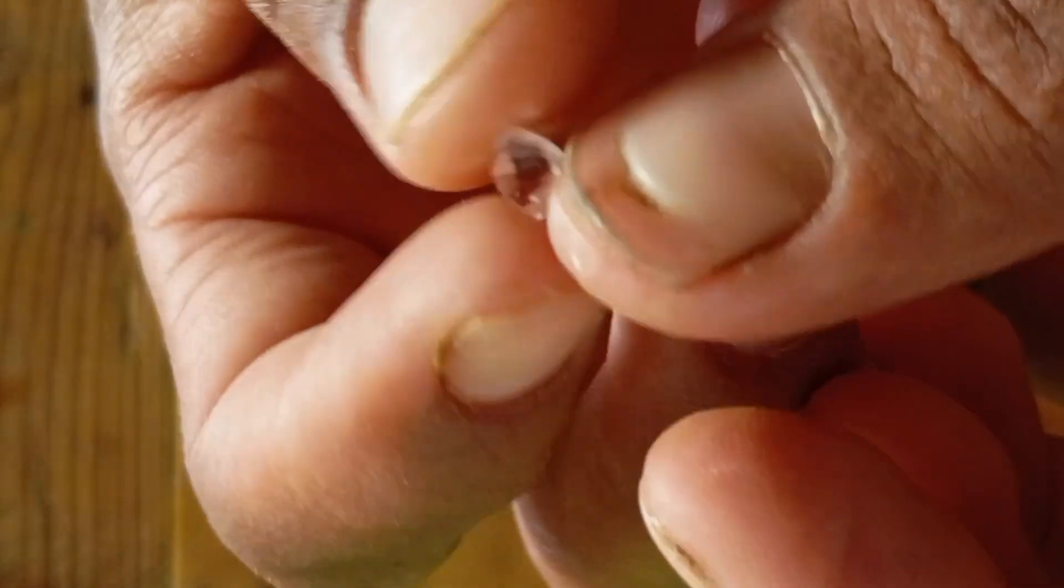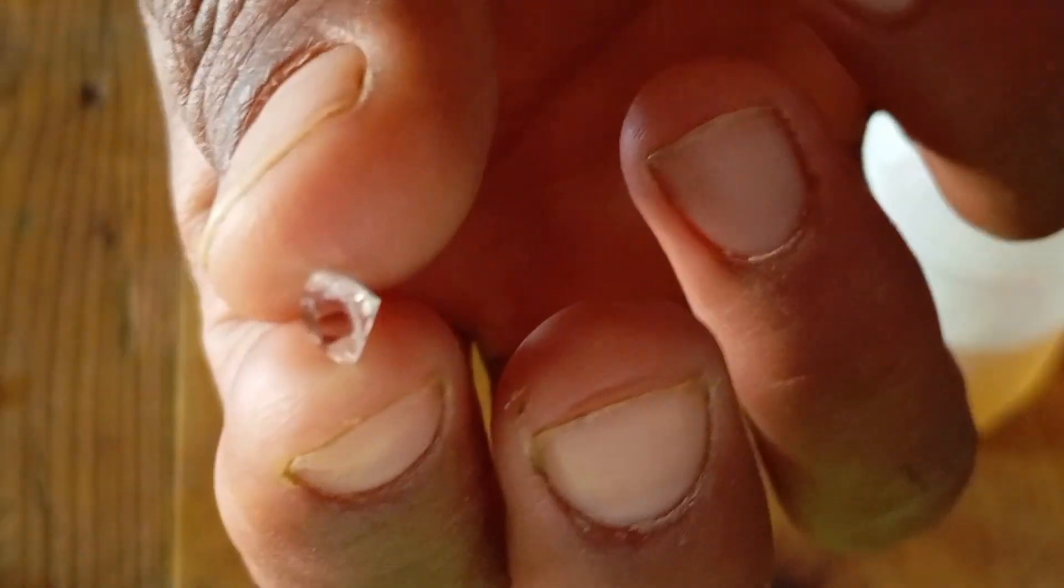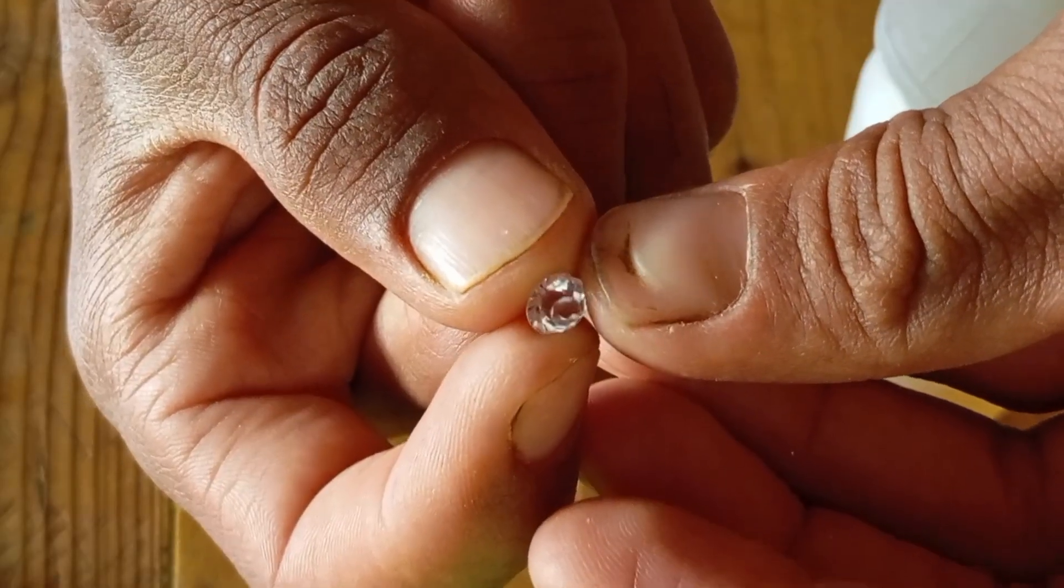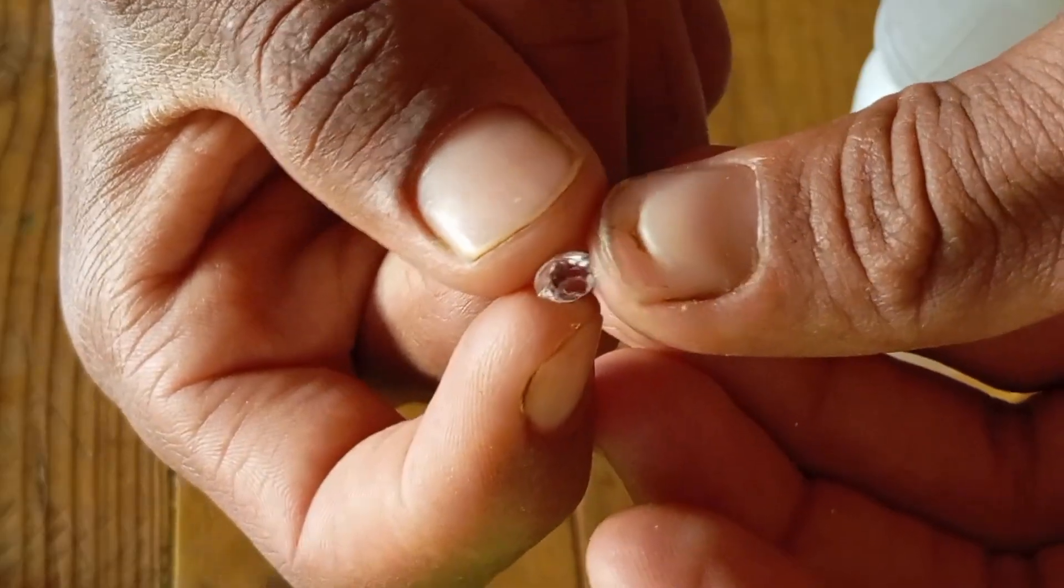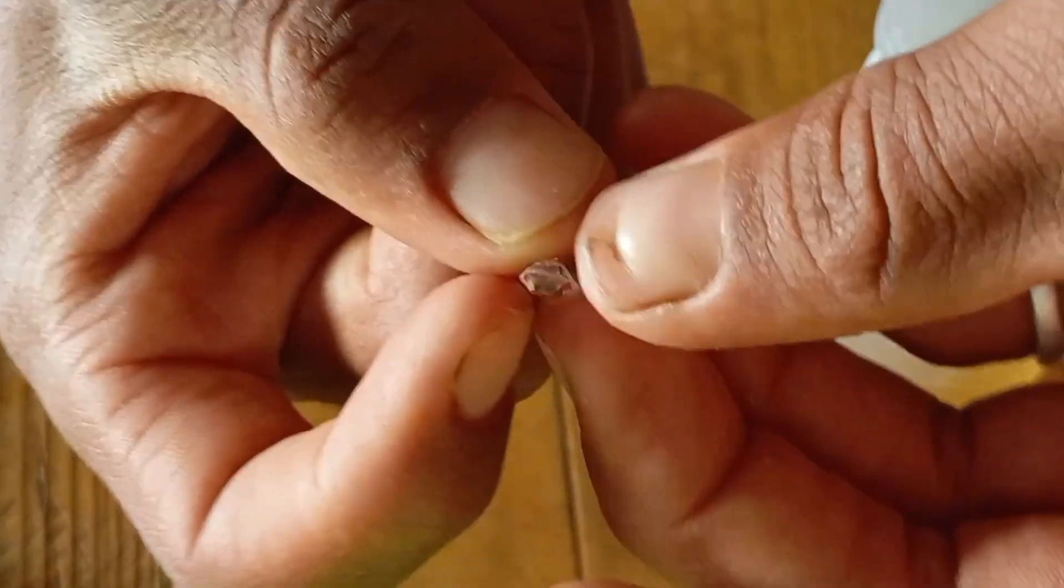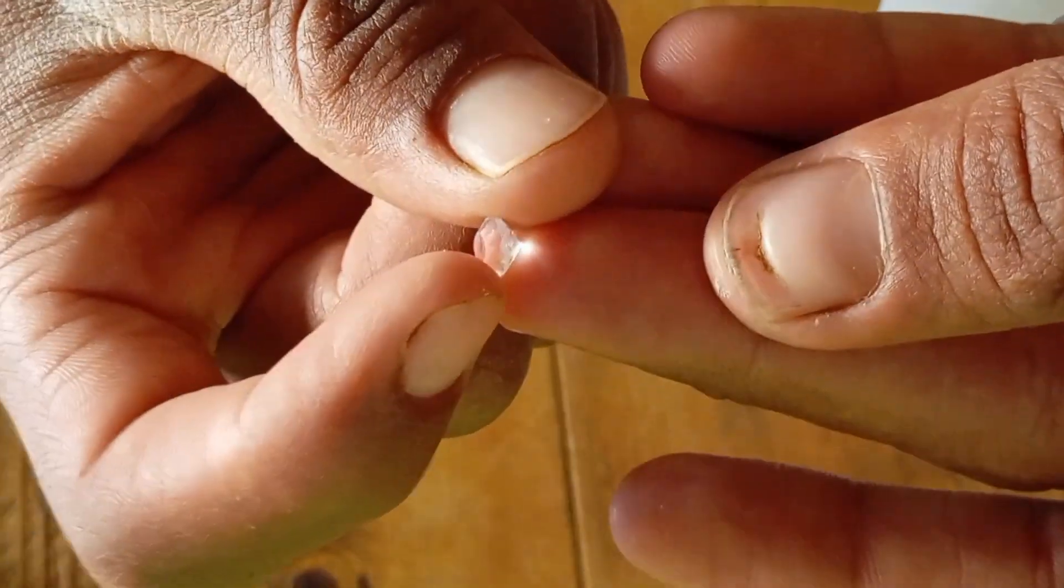The scratch test. Diamonds are the hardest natural substance on earth. Try scratching a piece of glass with your stone. If it leaves a mark, it's likely real. But be careful. Don't scratch other diamonds or jewelry. Use this test wisely.